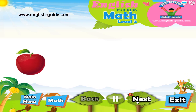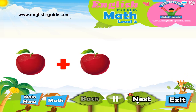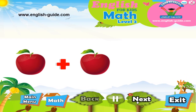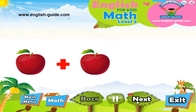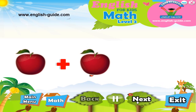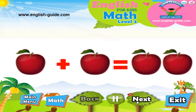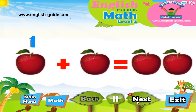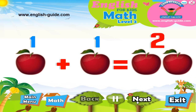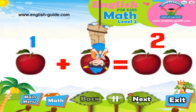If we have one apple and we add another apple, how many apples do we have? Let's count! One apple plus one apple equals two apples. So, one plus one equals two. Well done!